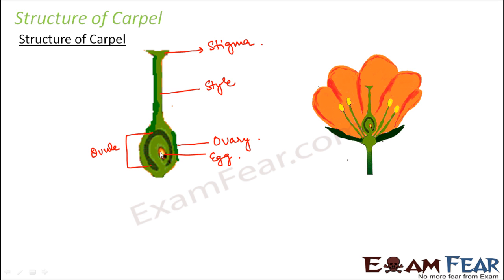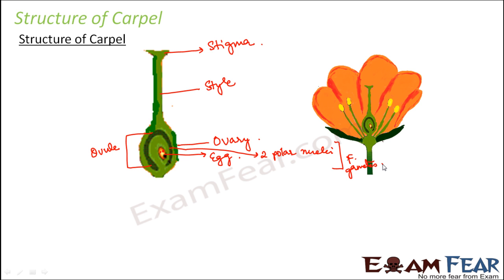Inside the ovule you also have two polar nuclei. I have discussed the process of sexual reproduction in plants in detail elsewhere, covering how polar nuclei are formed, how the egg is formed, and how they fuse with the pollen grains. These polar nuclei and the egg form the female gametes. The pollen grain will fuse with the egg and that is how fertilization takes place. This is the overall structure of a carpel.